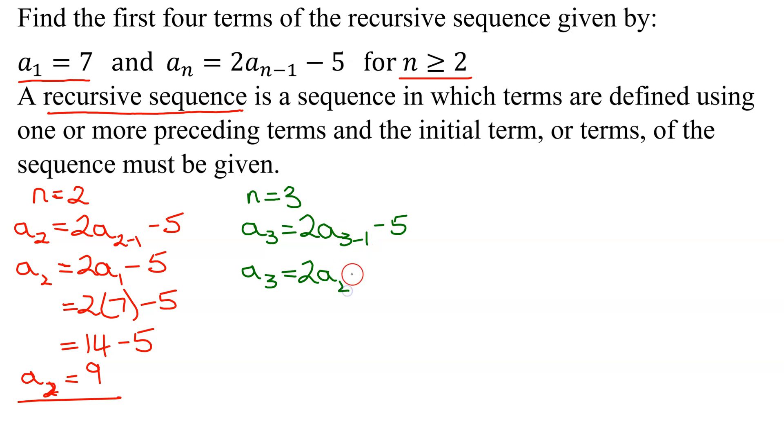a sub 2 minus 5. So that is just twice the second term. What was the second term? 9 minus 5. 2 times 9 is 18 minus 5, so the third term is 13.